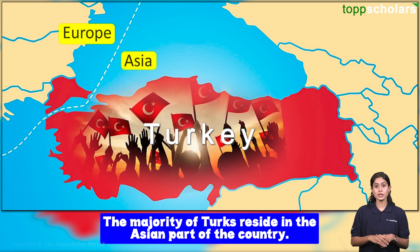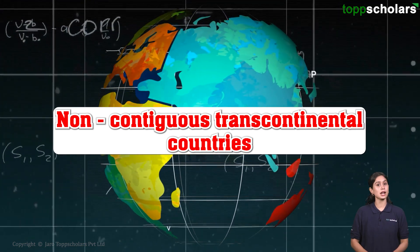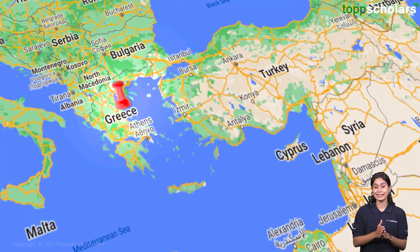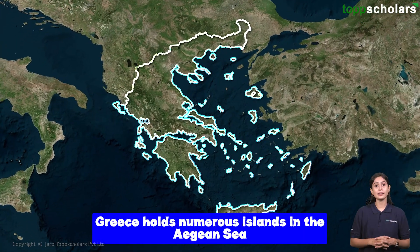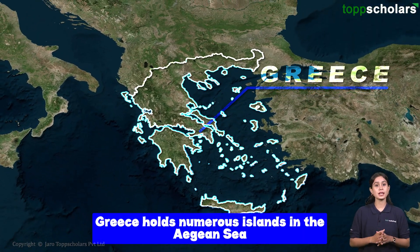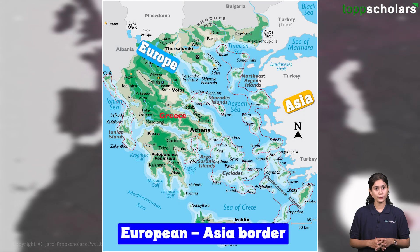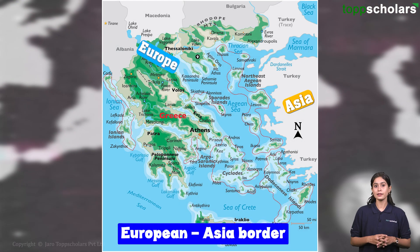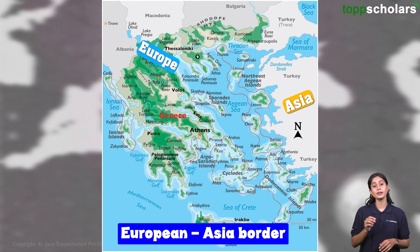Now let us look at the non-continuous transcontinental country, that is Greece. Greece holds numerous islands in the Aegean Sea, which is considered part of the European-Asia border. Some small Greek islands may technically be in Asia, while most of its territory is in southern Europe.